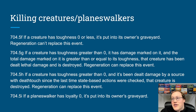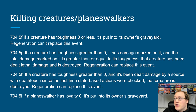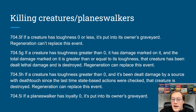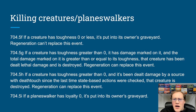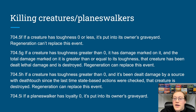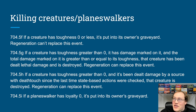Next is killing creatures and planeswalkers. There are three different SBAs that kill creatures. First, if a creature has toughness of zero or less, it's put into its owner's graveyard — regeneration cannot replace this because we're not destroying it. We can't say 'destroy' here because an indestructible creature with zero or less toughness would survive. Second, if a creature has lethal damage on it, it does get destroyed — so regeneration can replace this. Third, if a creature has taken any damage from a source with deathtouch, it also gets destroyed, and again regeneration can replace this.